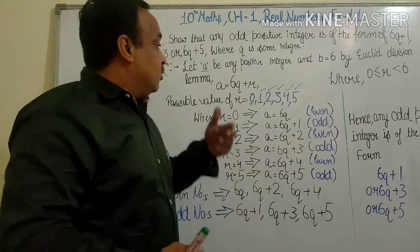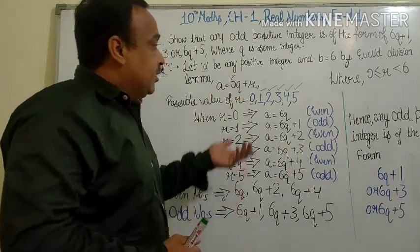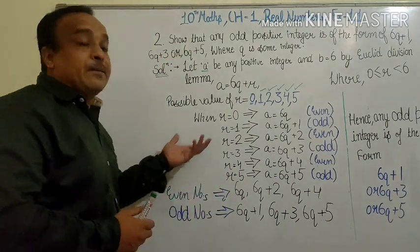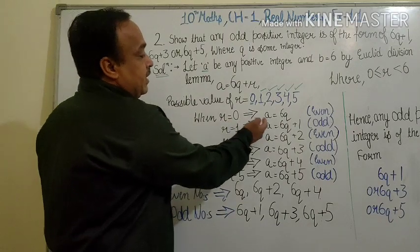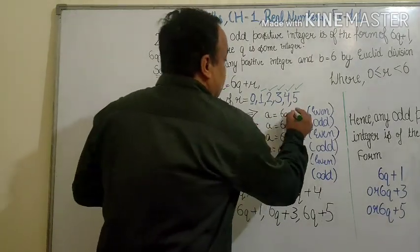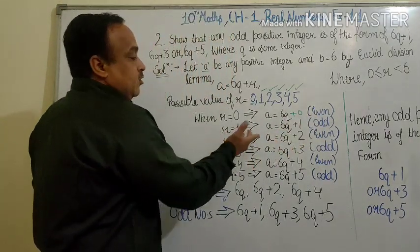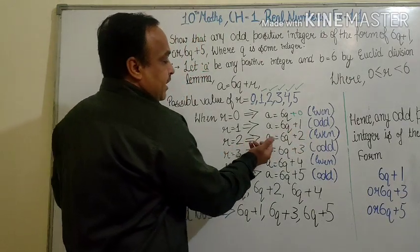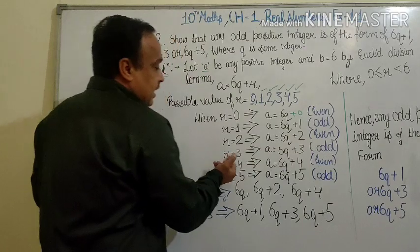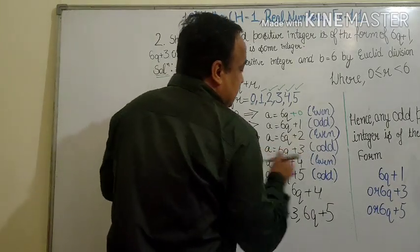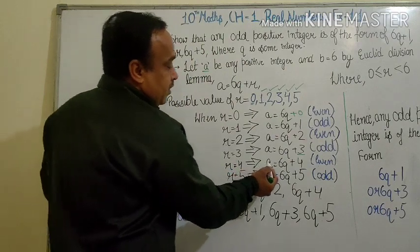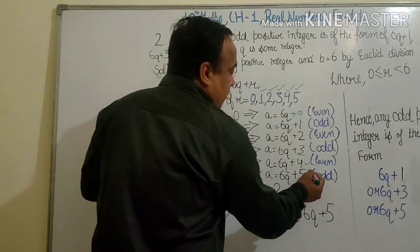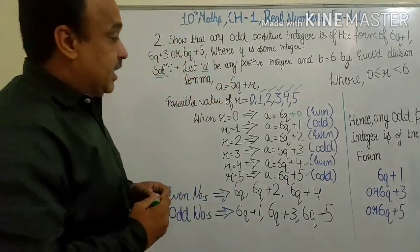All the possible values of r are 0, 1, 2, 3, 4, 5. When r is equal to 0, the number is 6q. When r=1, the number is 6q+1. When r=2, the number is 6q+2. When r=3, the number is 6q+3. When r=4, the number is 6q+4. When r=5, the number is 6q+5. These are the possible numbers.